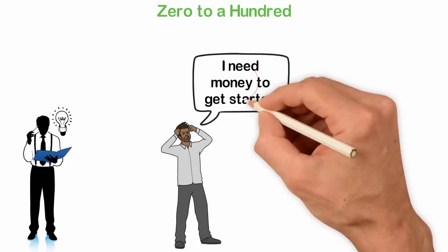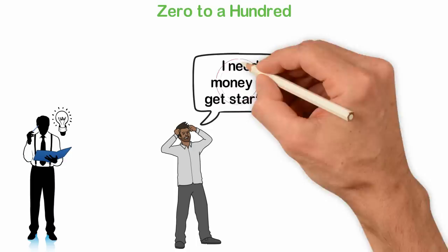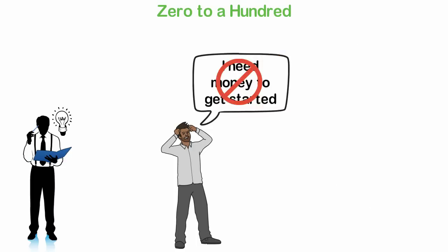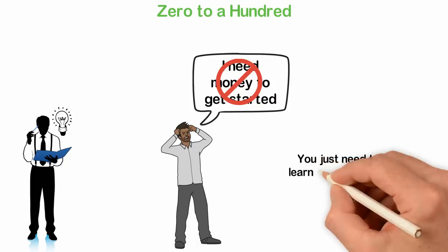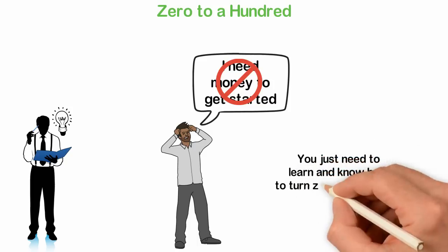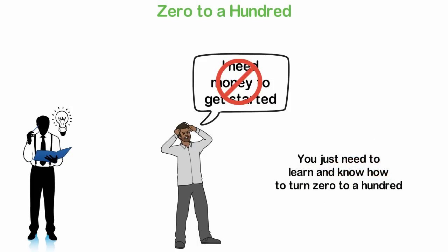When people wait for the 50 they will turn to 100, most times they will not see the 50 and then they will make excuses that the reason why they can't start a business is that they don't have money. No, you don't need to have money to build a business. You just need to learn and know how to turn 0 to 100.